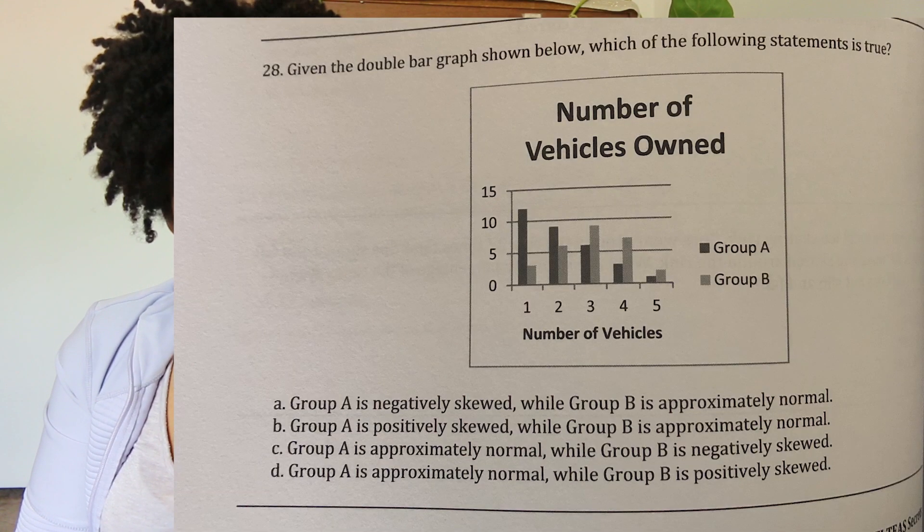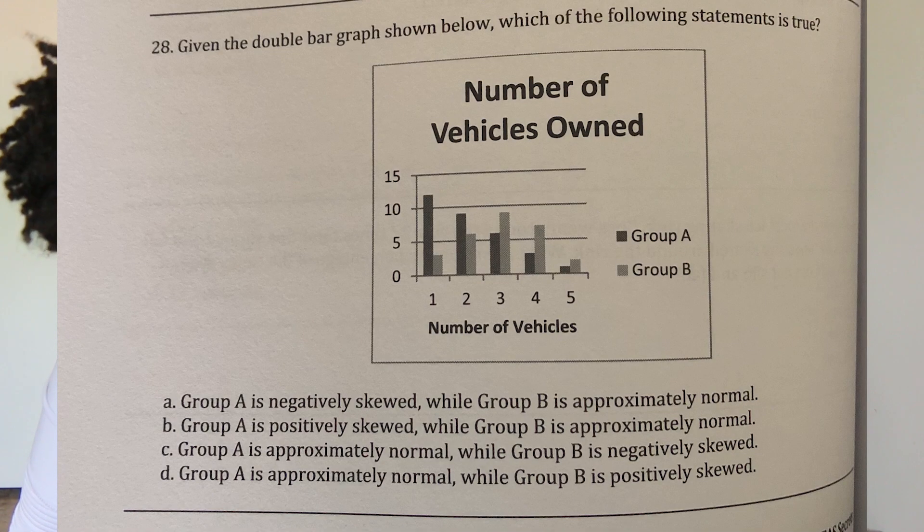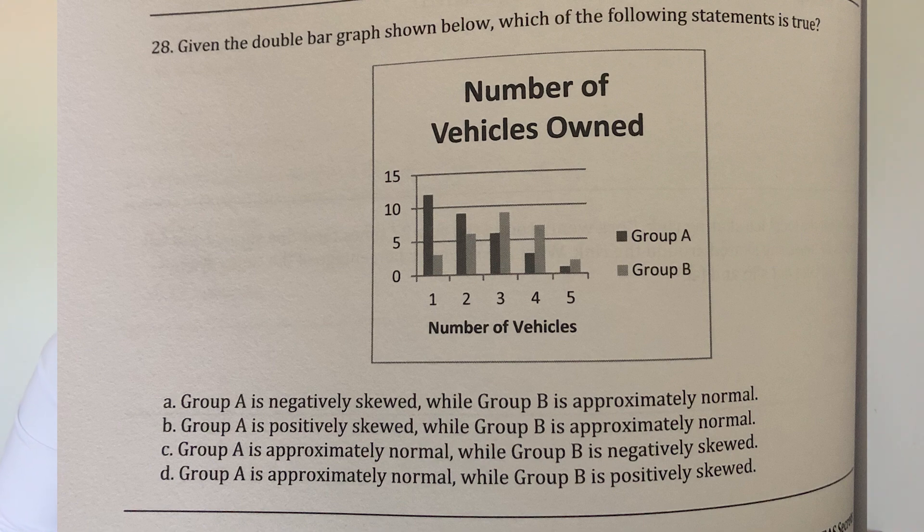Okay, given the double bar graph shown below, which of the following statements is true? One of the answers says 'negatively skewed.' I know what negatively skewed means, but not necessarily in the context of a bar graph. Let me look at this. Oh yeah, they do look like that — negatively skewed. Look how big the difference is. Okay so group A is negatively skewed while group B is approximately normal.